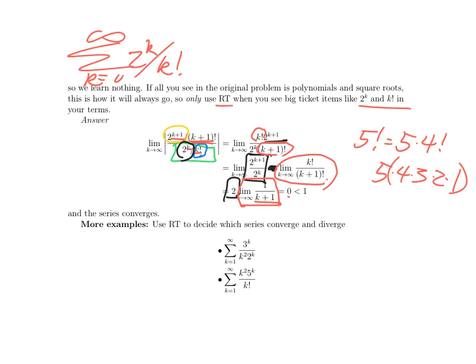Here are some more examples. If you stop and think about where the exponentials are, where the powers of k are, where the factorials are, you will begin to get a sense — when you look at a problem, you will start to be able to say in words how the ratio test is going to work. Take care until next time, when we will start to put all these together and decide which test to use.